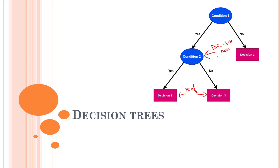It is called a decision tree because, similar to a tree, it starts with the root — the root being the first phase — and then expands to further branches, constructing a tree-like structure. We have the root at the top, and from below it the branches grow further.